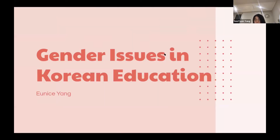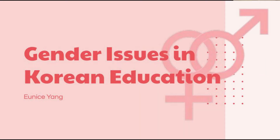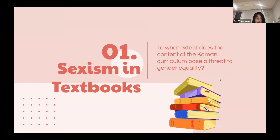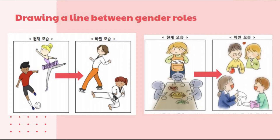I'm Eunice and today I will be speaking to you about the various gender issues in the Korean education curriculum. Although not explicit, textbooks used in the Korean educational curriculum exhibit some kind of gender bias and stereotypes. This usually occurs in three main ways: by defining gender characteristics, fixating gender roles, and spotlighting more males as heroes of history.